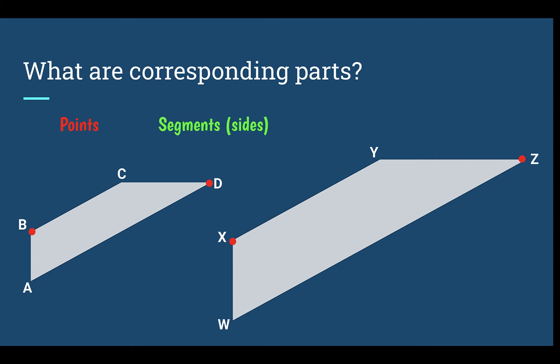Next, let's look at segments or sides. Corresponding sides are the same side position-wise on both shapes. Here I have side AD, which would correspond with side WZ. AD is the longest side of the small shape; WZ is the longest side of the larger shape — those are corresponding segments or sides. And then CD would correspond with segment YZ on the larger shape.